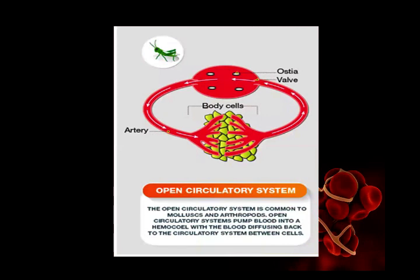Observe the diagram carefully - the organism present is the grasshopper. The open type circulatory system is mostly present in molluscs and arthropods. The grasshopper is a terrestrial arthropod. You can observe blood vessels, arteries, and valves in this system. This system is called open type because blood does not flow inside vessels - it is open.